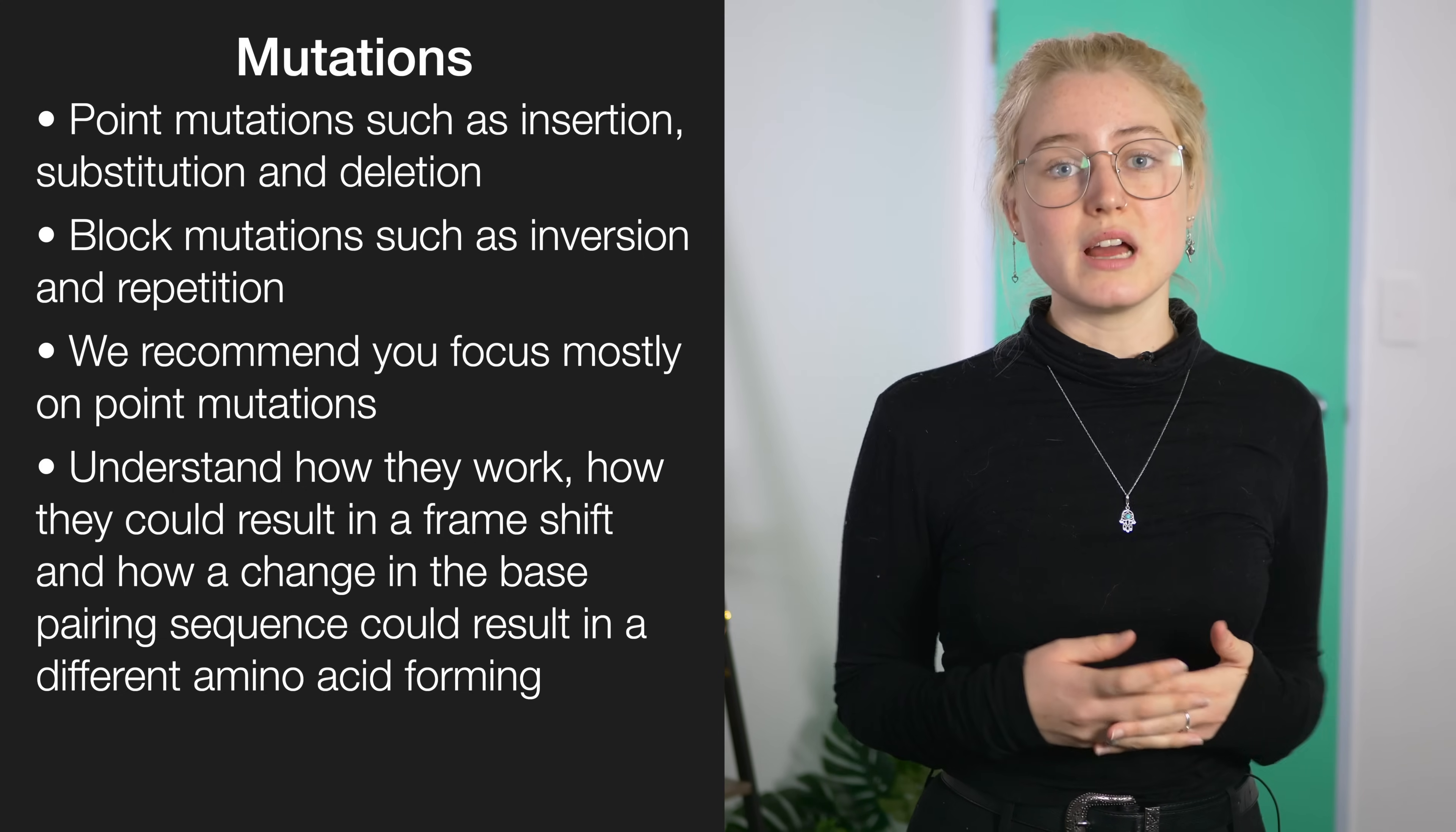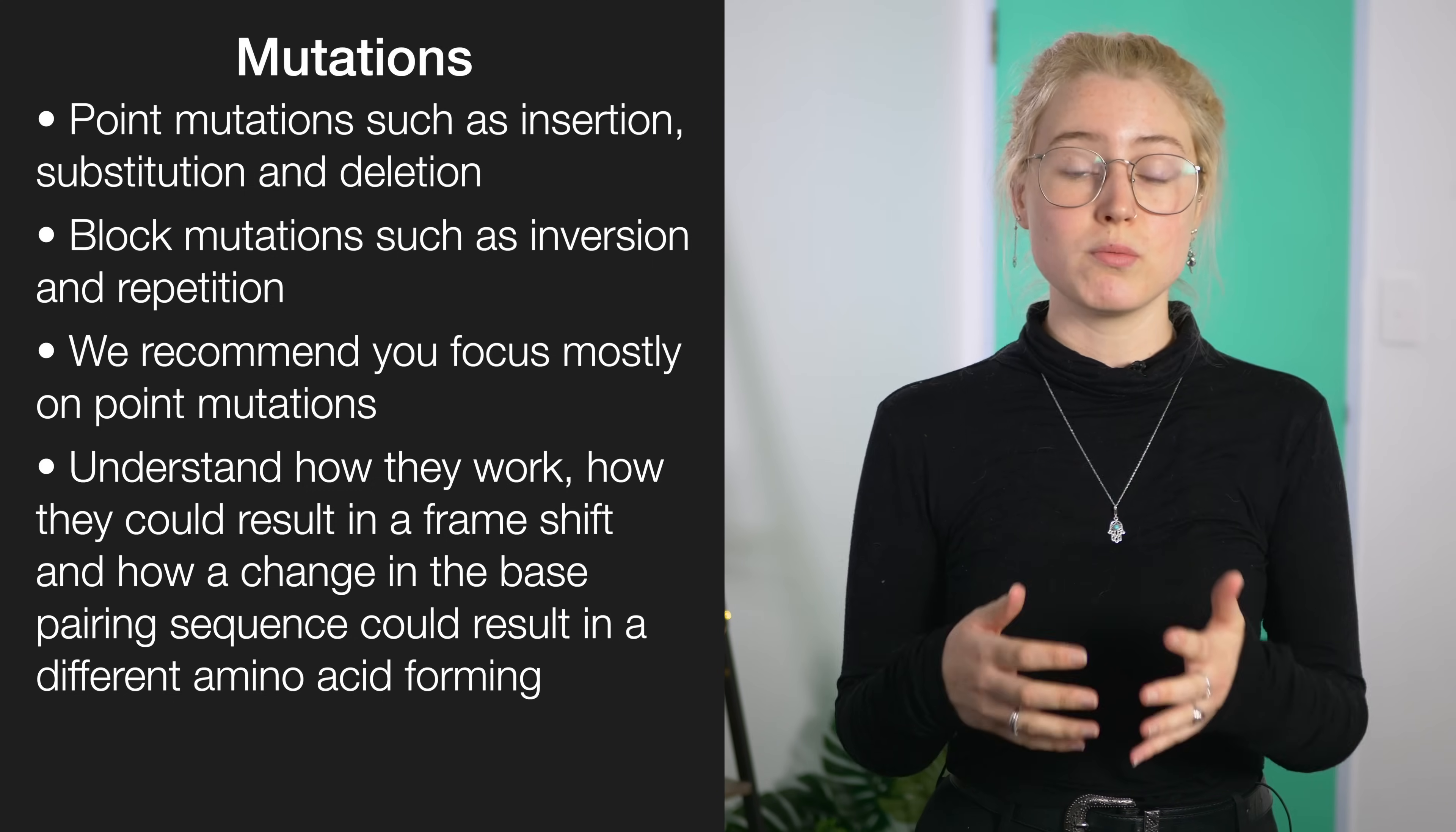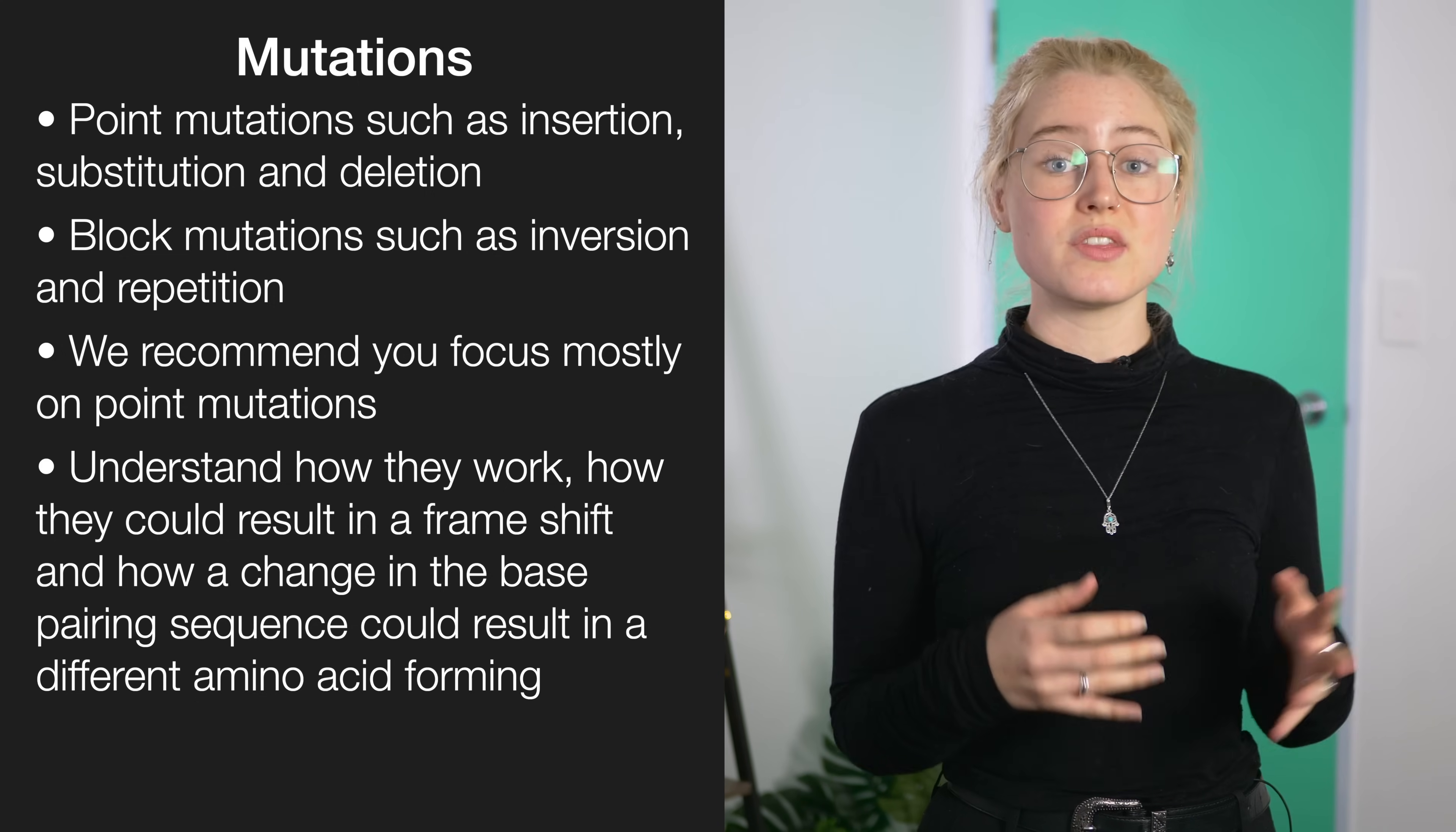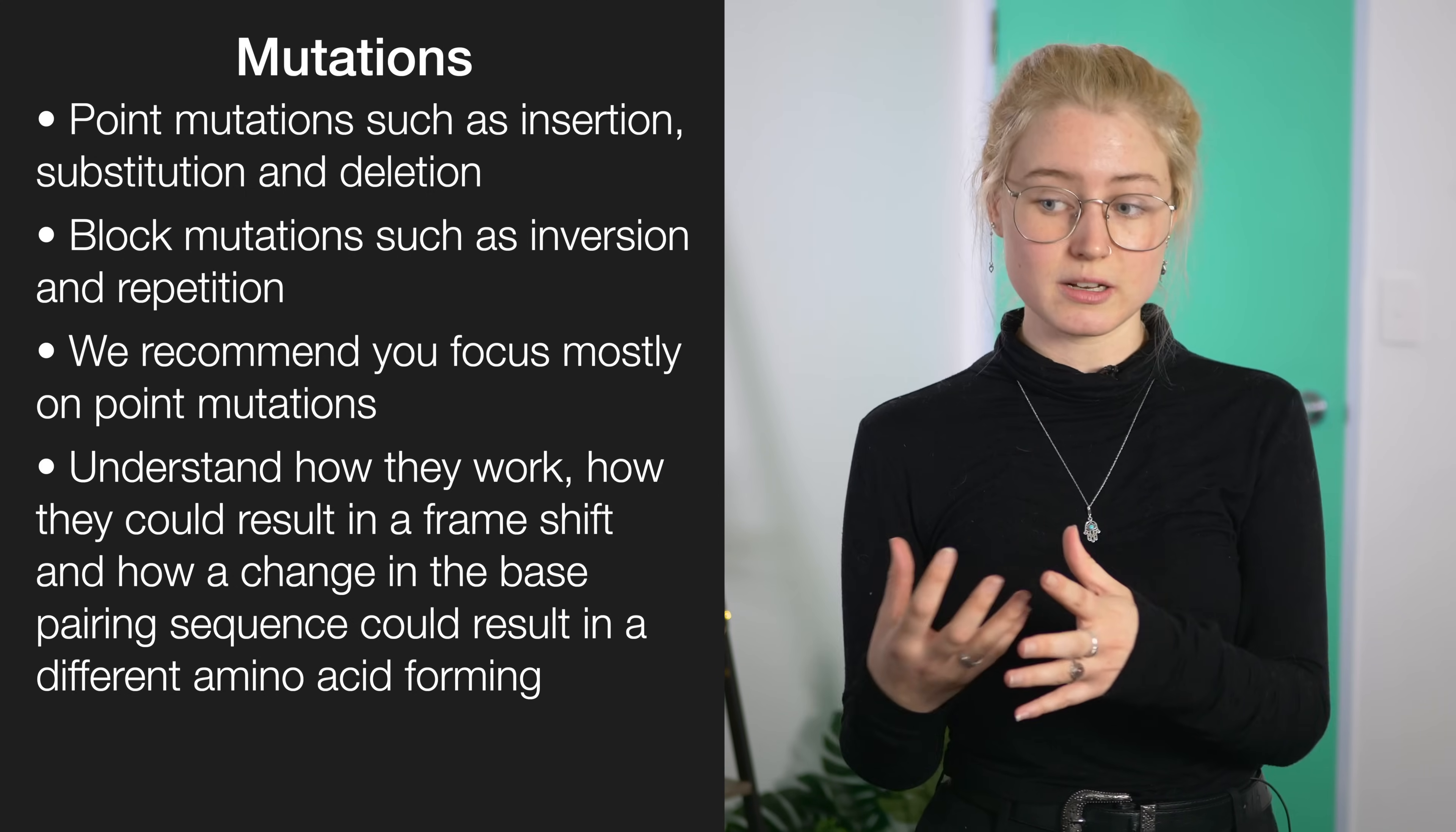You also want to understand how the changing of the base pairing sequences can result in a different amino acid forming, however not necessarily all the time. Because if you refer to your table of amino acid production and the triplets that can code for it, you can see that there are some double ups, and so there are some mutations that can happen which will still produce the same amino acid.